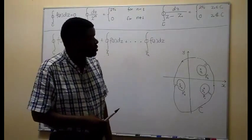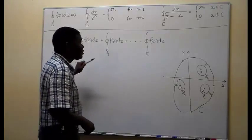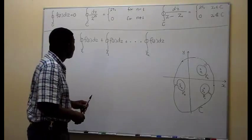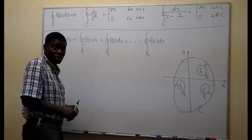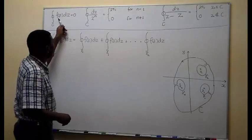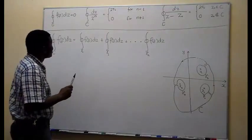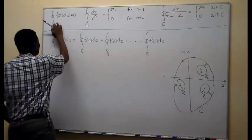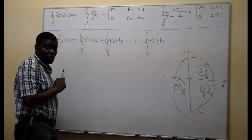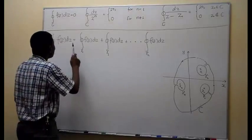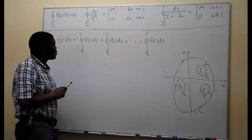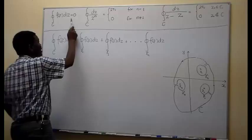By this time we have seen and discussed the following. The first situation we looked at concerning the theory of integration of complex functions was what we called Cauchy's theorem. This theorem presented a situation where we are integrating a complex function f which is supposed to be analytic in and on a simple closed curve C. The conclusion of that theorem was that the integral is zero.